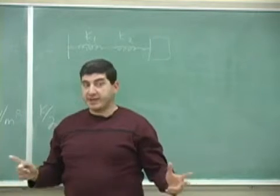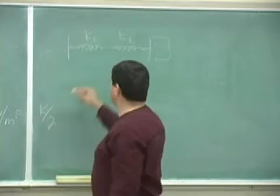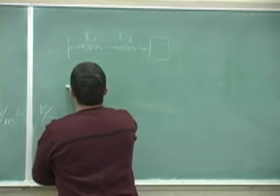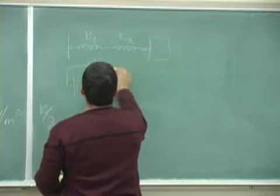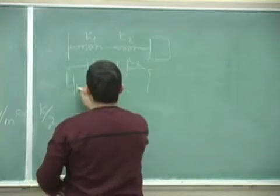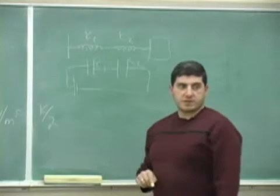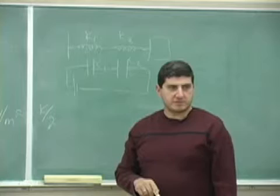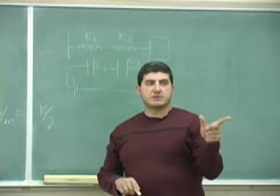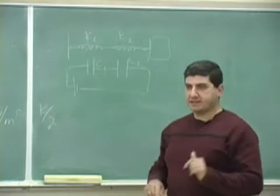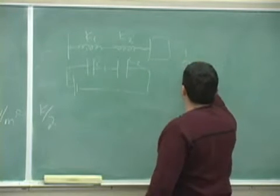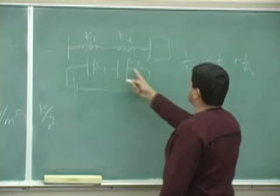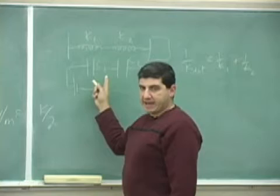How do springs add in series? Well, anyone know how capacitors add in series? Add in series. If you have a battery, it's the same formula. We're going to do that in physics three. Exactly. They're reciprocals add. 1 over K total is 1 over K1 plus 1 over K2.